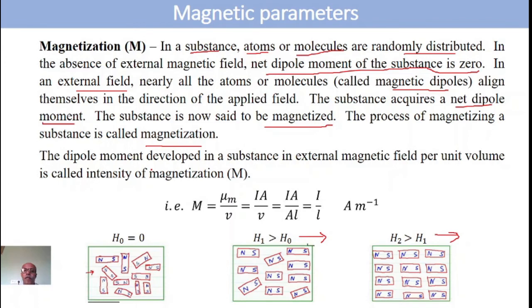The dipole moment of such a magnetized substance is capital M, called the intensity of magnetization. Intensity of magnetization is the magnetic moment developed in the substance per unit volume when subjected to an externally applied magnetic field. Since mu m = I × A and volume V = A × L, the AA cancels, giving magnetic moment M = I/L, which is current per unit length. The unit is ampere per meter.